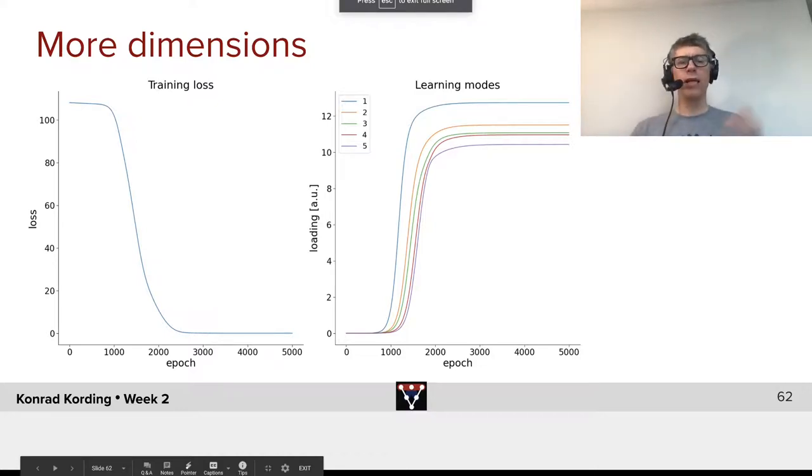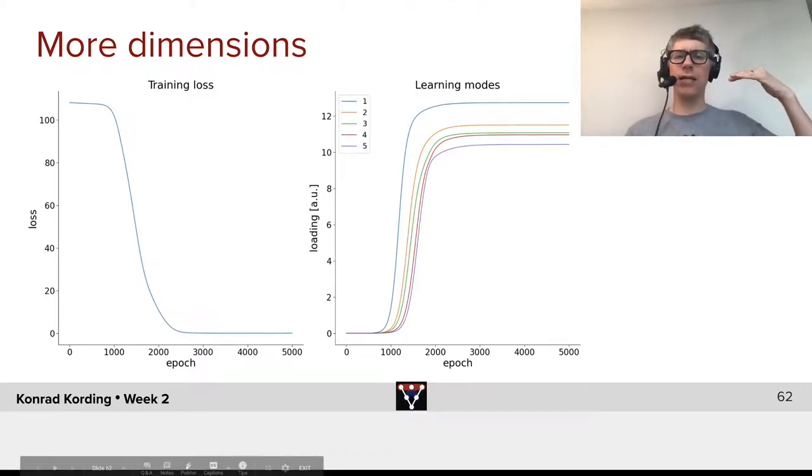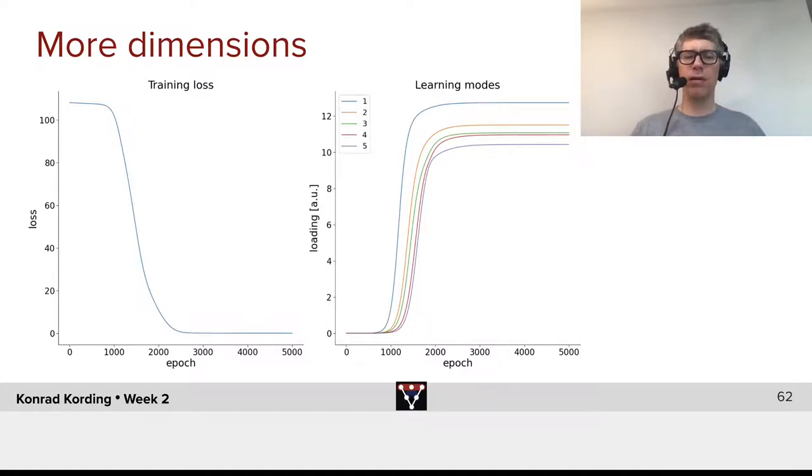So what do we see here? We can look at the training loss. It first has some period of time where effectively nothing happens, and then very quick learning happens, and then it converges.